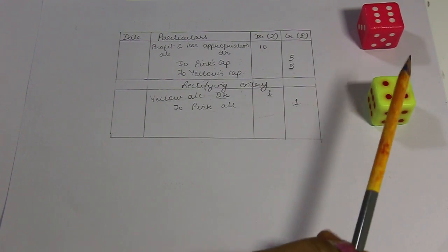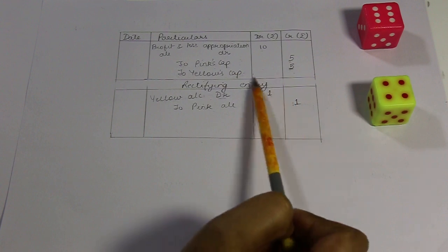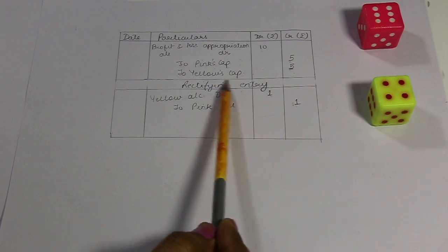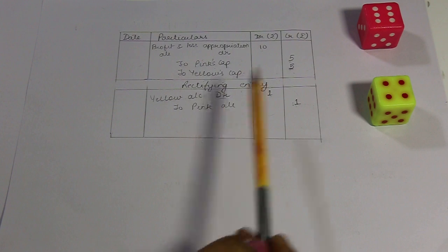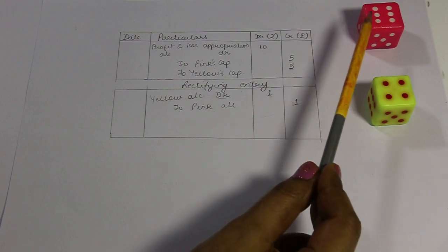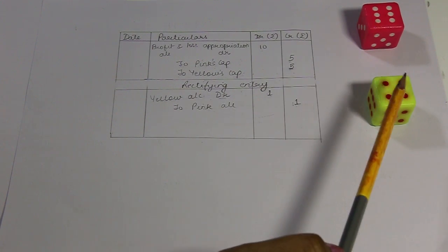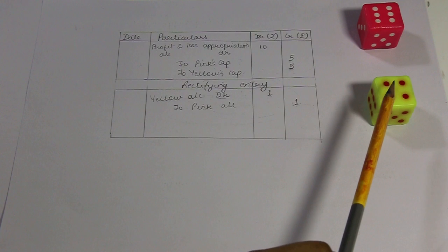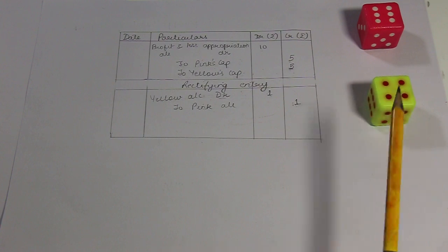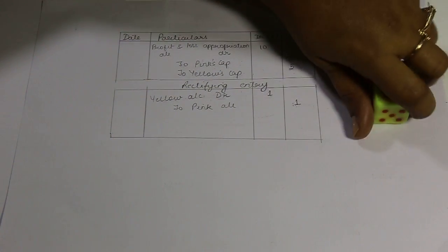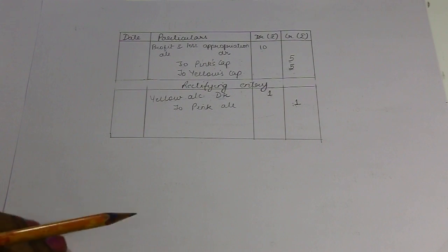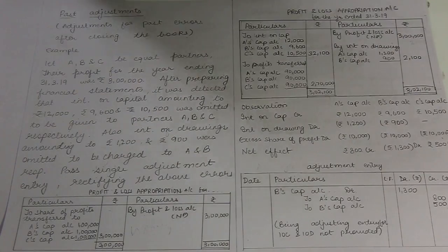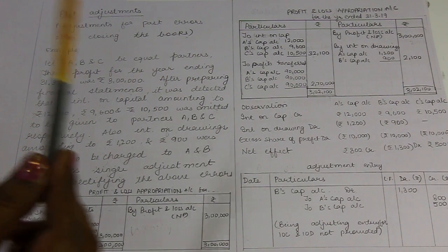So from a single rectifying entry, Pink will get Rs.6 and Yellow will get Rs.4. Now we can look at some sums and verify this.